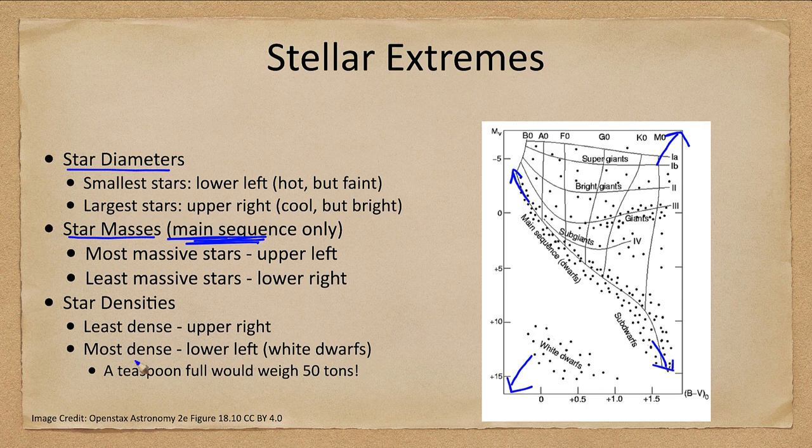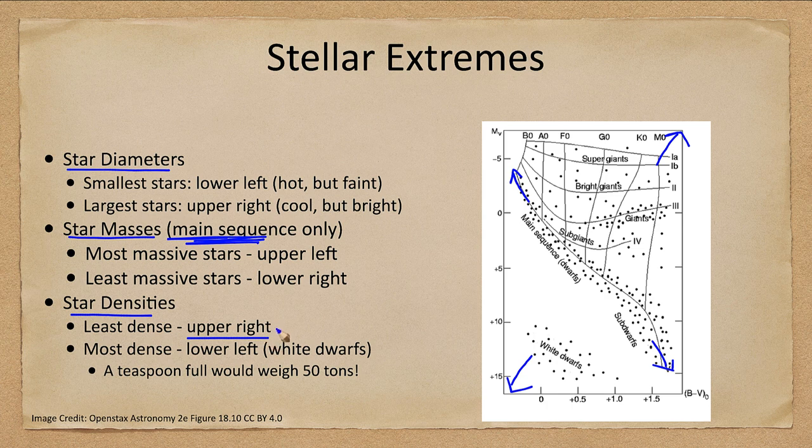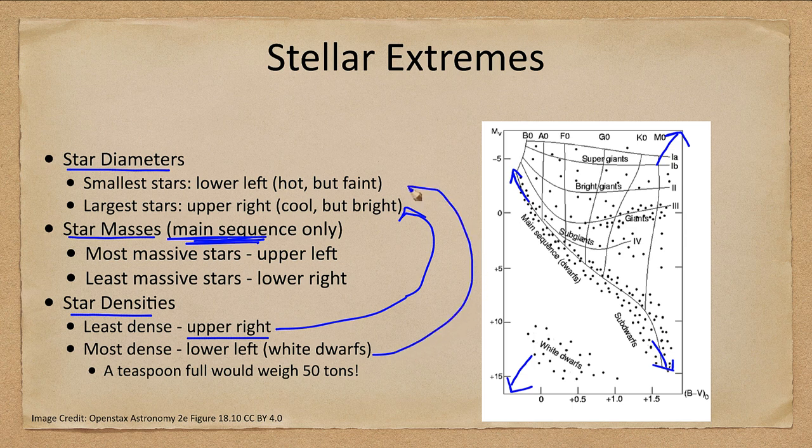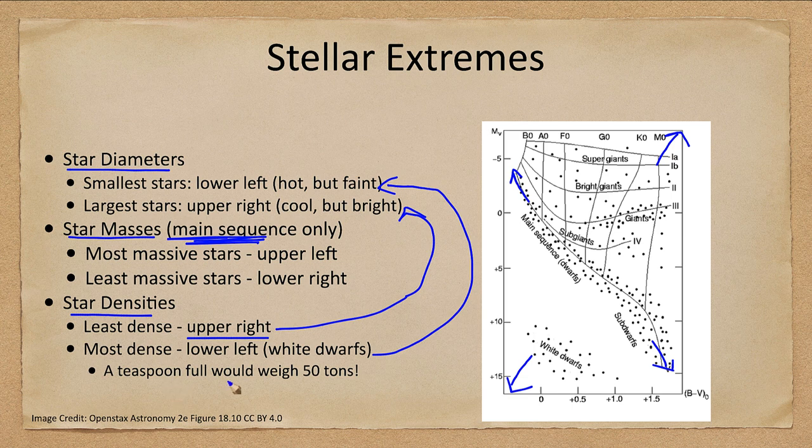For densities, the least dense are in the upper right with the largest stars, so the largest stars would also be the least dense. The most dense in the lower left would be the white dwarf stars, which are where the smallest stars are, and white dwarf material is extremely dense with a teaspoon weighing 50 tons.